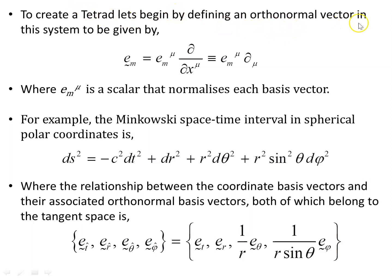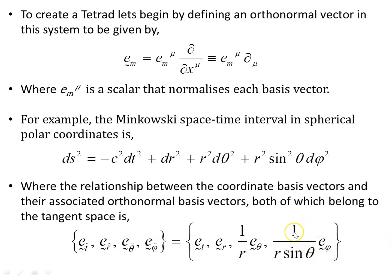To create a tetrad, we begin by defining an orthonormal vector to be of unit length and orthogonal to the others. Notice the coordinate basis vectors have scalars in front — this scalar normalizes each basis vector. For example, in Minkowski spacetime in spherical polar coordinates, the orthonormal basis vectors e_t-hat, e_r-hat, e_theta-hat, e_phi-hat are the coordinate basis vectors scaled by normalization scalars. So e_phi-hat dotted with itself gives one — these scalars normalize it to unit length.